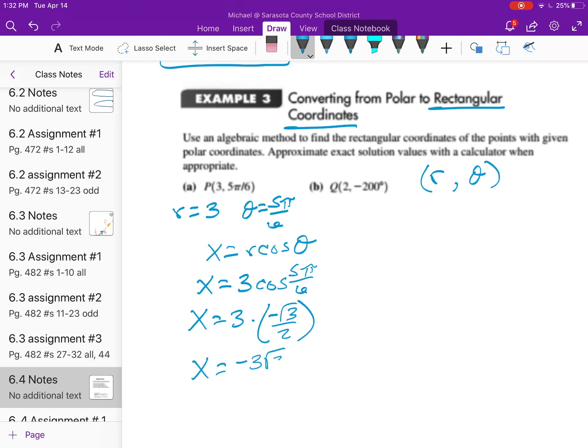We do the same concept with y, except we know that y equals r times the sine of theta. We substitute the same r and theta in. The sine of 5π over 6 is 1 half, so y equals 3 times 1 half, which is 3 halves.